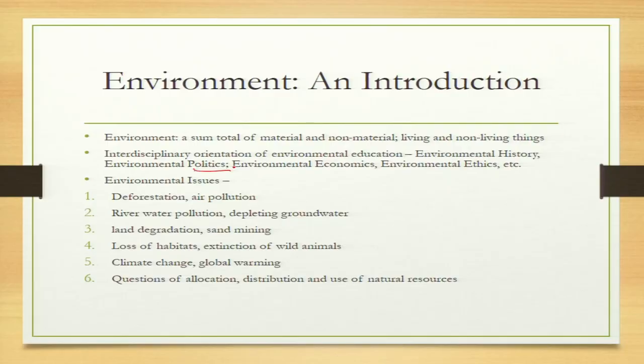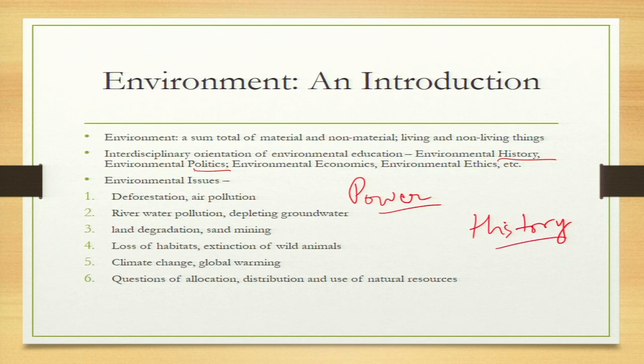For example, in environmental politics — because politics is my major discipline — we learn about the dimension of power. In politics, power is the most important thing. Similarly, in history, whatever the history of a country is, in the same way we can approach its environmental history. For instance, if you look at Chipko, the study done by Ramchandra Guha tells you that its history goes back to the 1920s or even much before that.